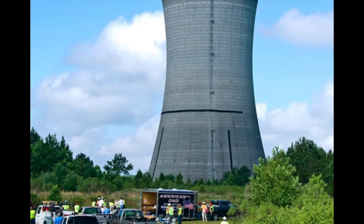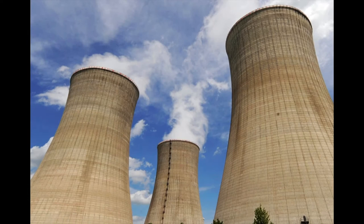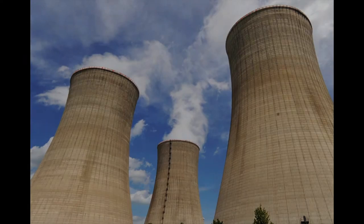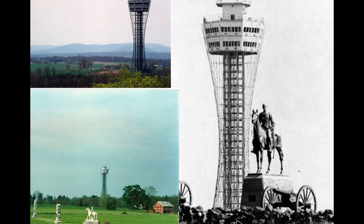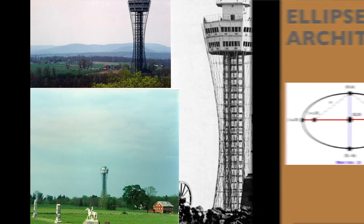While cooling towers are an example of a hyperbolic structure in which the system benefits from the shape, some hyperbolas in architecture are solely there because they are pleasing to the eye. For example, the James S. McDonnell Planetarium in St. Louis is hyperbolic, but there is no real significance as to why. The Gettysburg National Tower is another example of a building with a hyperboloid design — it was an observation tower in Gettysburg, Pennsylvania, but was demolished in the year 2000.